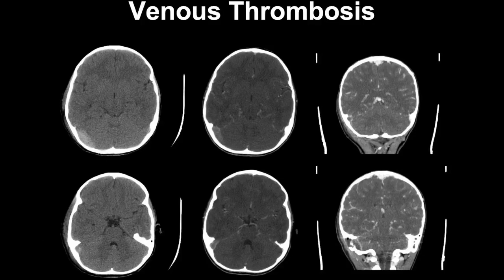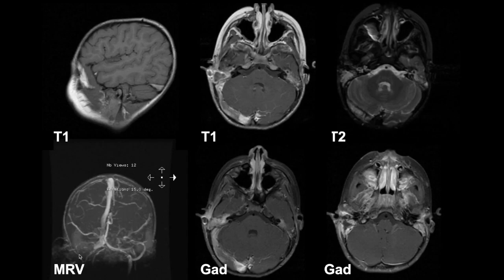Here is an example involving the transverse sinus: a hyperdense transverse sinus with a filling defect in a pediatric patient caused by otomastoiditis on the same side. On MRI, the filling defect is visible on MR venogram. On post-contrast images you must also look at pre-gadolinium T1 images - in this case there is T1 shortening of the clot in the right transverse sinus, not enhancement. All findings of otomastoiditis are visible in the right middle ear and right mastoid air cells.